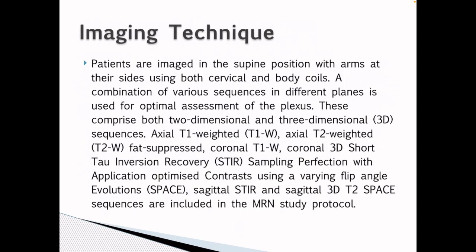Imaging technique: Patients are imaged in the supine position with arms at their sides using both cervical and body coils. A combination of various sequences in different planes is used for optimal assessment of the plexus. These comprise both 2D and 3D sequences like axial T1,